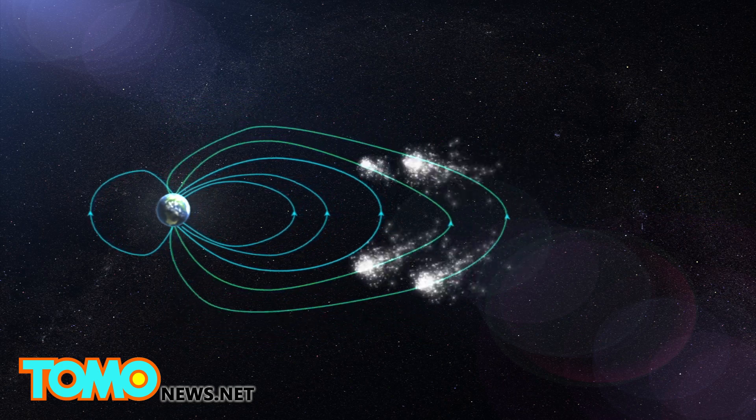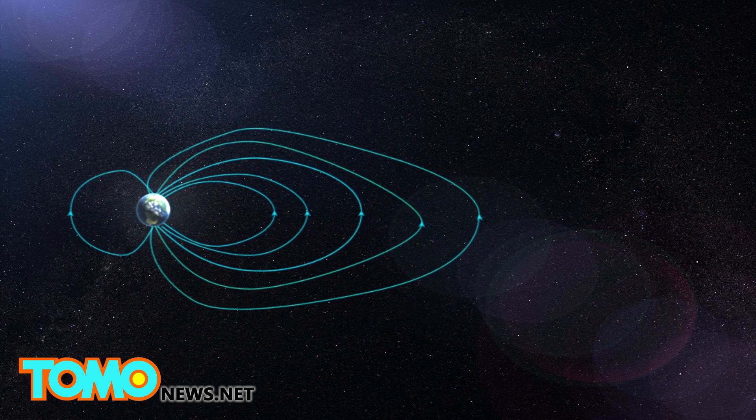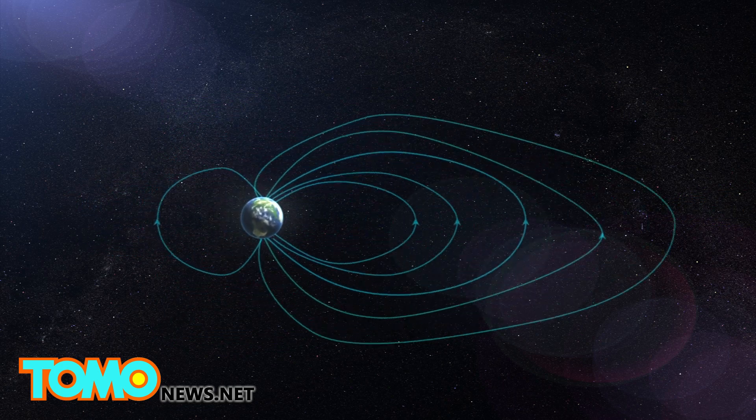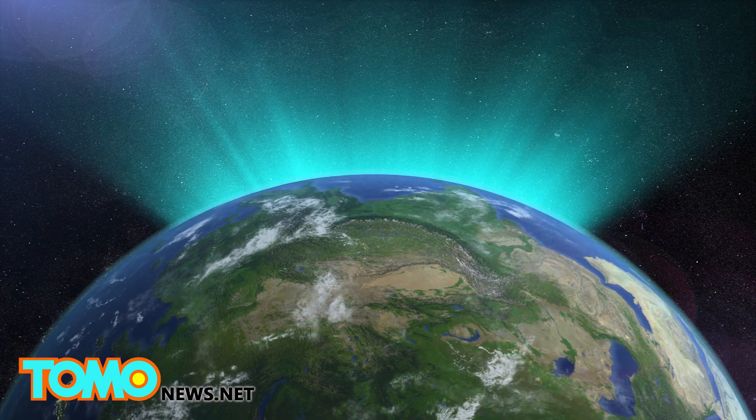Solar wind can cause the Earth's magnetic field lines to disconnect from the planet. When the magnetic field lines reconnect, charged particles from the solar wind enter the Earth's atmosphere, causing the Aurora.